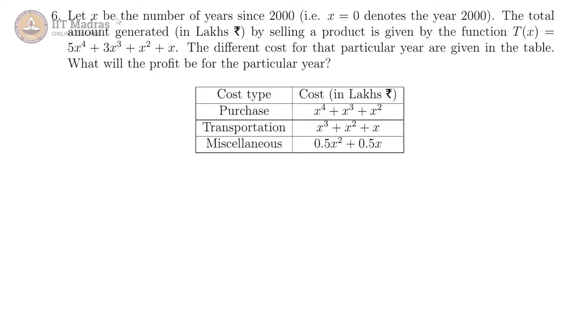In this question, let x be the number of years since the year 2000. So x equals 0 denotes the year 2000. And the total amount generated in lakhs by selling a product is given by t of x. This is a polynomial which has the variable as a number of years since 2000.